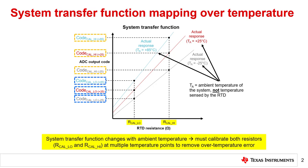Since it is not possible to calibrate out the error at every individual temperature, we need to choose a few calibration temperatures and assume the temperature error is linear between these points. Importantly, we still use the same calibrated resistances, RCAL low and RCAL high, to generate these additional ADC codes.